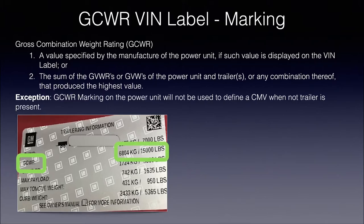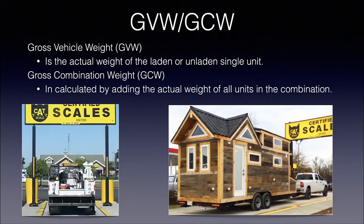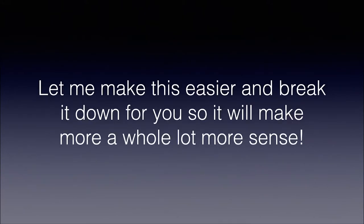One exception to note: if you have a GCWR marking on your VIN label but you're not pulling a trailer, that is not used to define whether you're a commercial motor vehicle — only the gross vehicle weight rating applies at that point. In the second example, you have a vehicle with a gross combination weight rating of 27,500 pounds. Actual gross vehicle weight and combination weight can only be determined by actually weighing the vehicles — it's the laden or empty weight. This matters because a vehicle you think is under 10,000 pounds might go over once loaded.